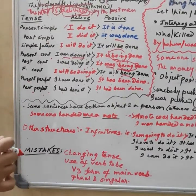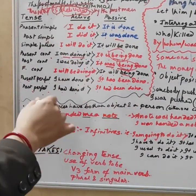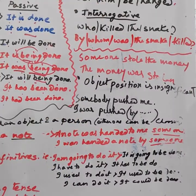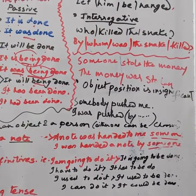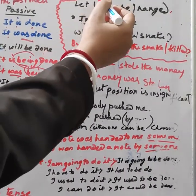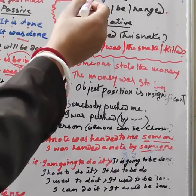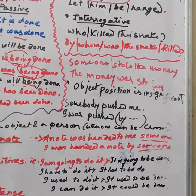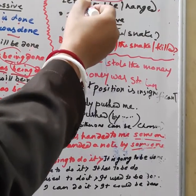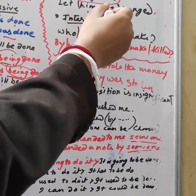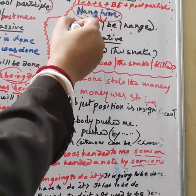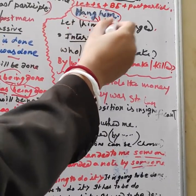The remaining tenses don't apply to passive voice. Now some special cases. Imperative sentences express orders or requests. For example, 'Hang him' in active voice changes to passive voice as: 'Let him be hanged.' The structure is: let + subject + be + past participle.